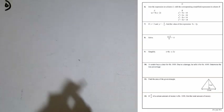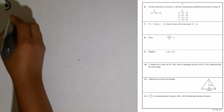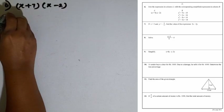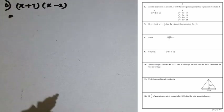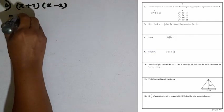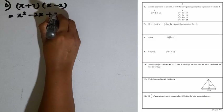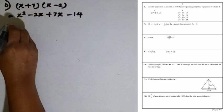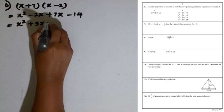Question number 6: join the expression in column A with the corresponding simplified expression in column B. In column A we have (x plus 7)(x minus 2). We multiply each term in the first expression by the second: x times x is x squared, x times minus 2 is minus 2x, plus 7 times x is plus 7x, and plus 7 times minus 2 is minus 14. Adding like terms: x squared plus 5x minus 14.